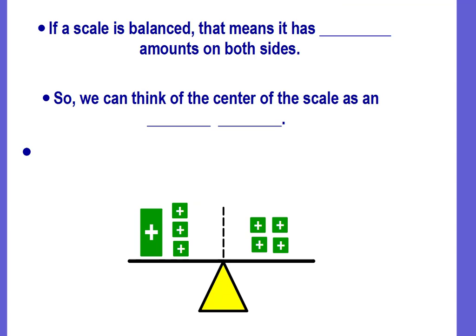So if a scale is balanced that means that it has equal amounts on both sides, both on the left and the right side. So we can think of the center of the scale as being an equal sign. So here we have the left side, the right side and the center is our equals and we sometimes draw this line to represent the equal sign.